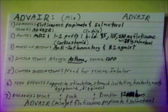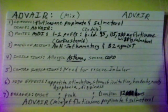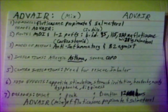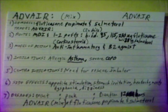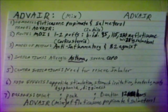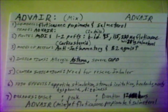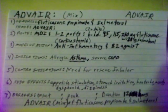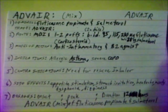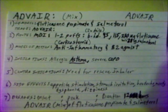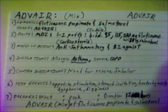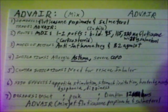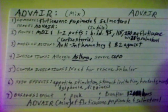Advair is a mix of fluticasone propionate and salmeterol. Trade name: Advair. Given by metered dose inhaler, 1 to 2 puffs BID — twice daily. Doses of 45, 115, or 230 micrograms of fluticasone propionate with 21 micrograms of salmeterol.